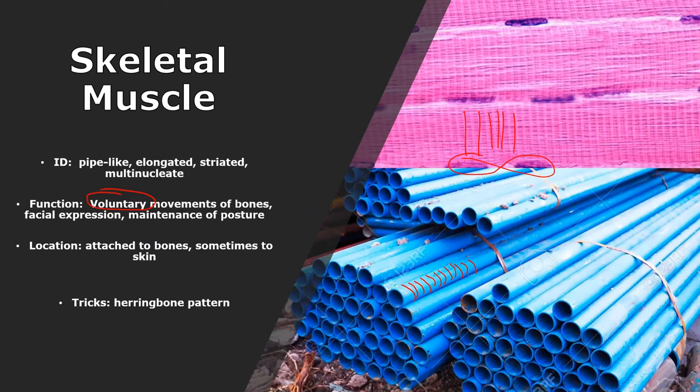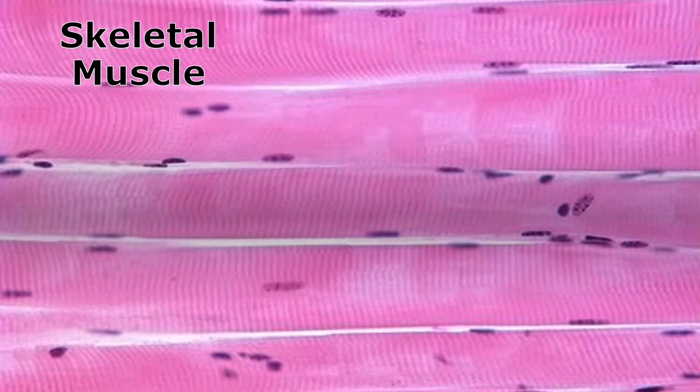The herringbone pattern, the stacks of pipes. This one's usually not missed ever except for people that just don't study at all. These elongated, striated, multi-nucleate cells are classic skeletal muscle. We see a stack of pipes here. I see the striations very clearly. I see the multiple nuclei in the cell very clearly. Where would I find this? Attached to the bones or skin. What's the function? To move the bones or the skin. Another one. I see five pipes here. Each of them are ribbed. I can see the striations very clearly, and I can see the multiple nuclei.